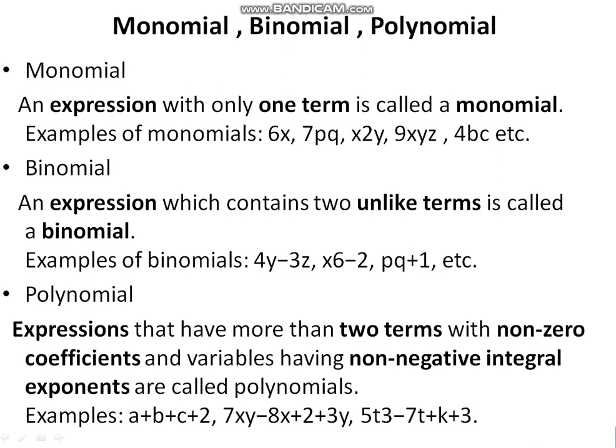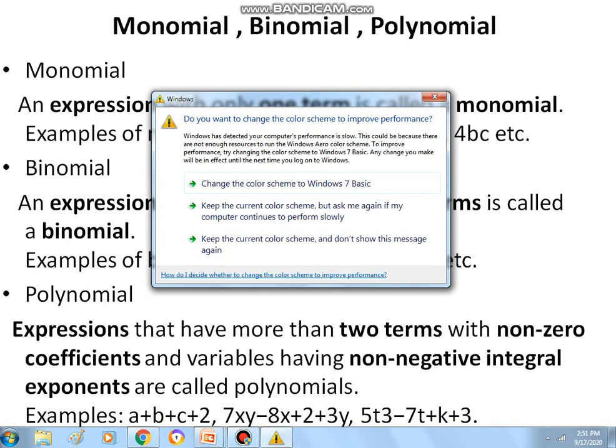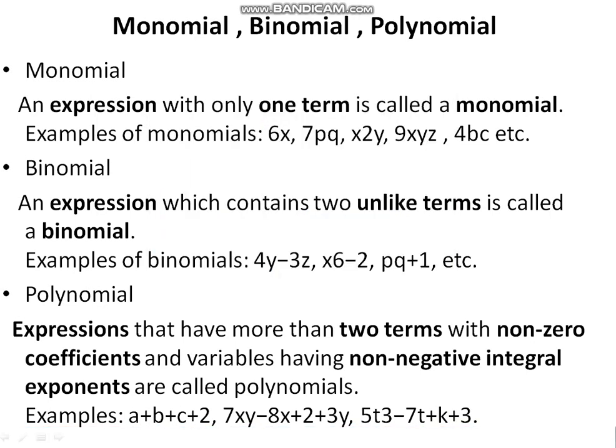Next are monomial, binomial, and polynomial. An expression with only one term is called a monomial. An expression which contains two unlike terms is called a binomial. A two-term algebraic expression is called a binomial. For example, 4y minus 3z, 6x minus 2, pq plus 1, etc. are examples of binomials.